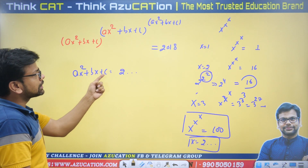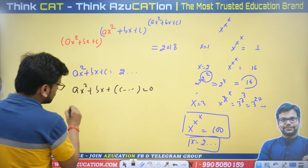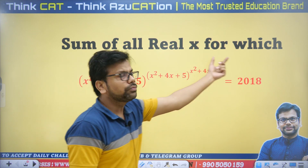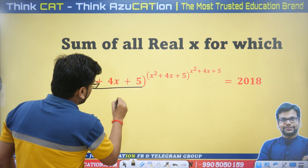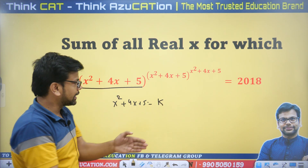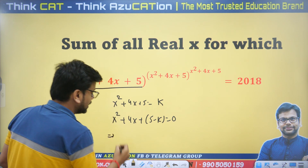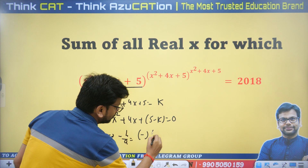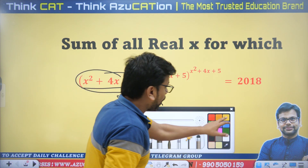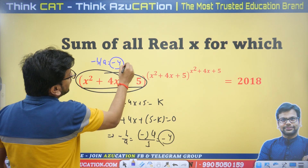Now, coming to our actual question: the expression is x² + 4x + 5 raised to the same polynomial power, and so on, equal to 2018. Irrespective of the number of powers, x² + 4x + 5 leads to some unique constant k. From here, x² + 4x + 5 − k = 0, and the sum of roots is −b/a = −4/1 = −4. So the answer to this question is −4. This is actually a 5-to-10-second question.